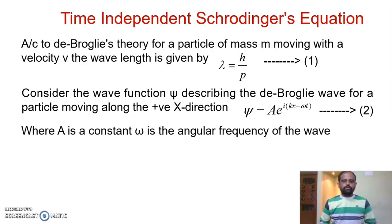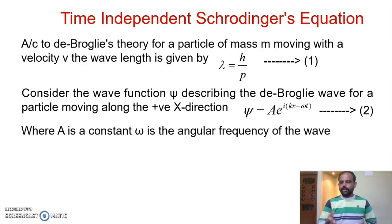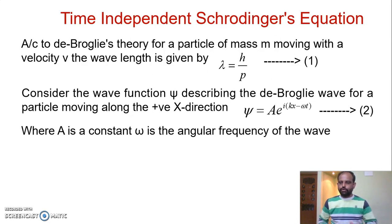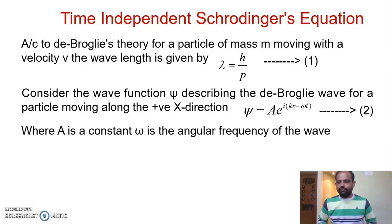In this equation, A is a constant, k is the wave number where k equals 2π divided by lambda, and omega is the angular frequency.